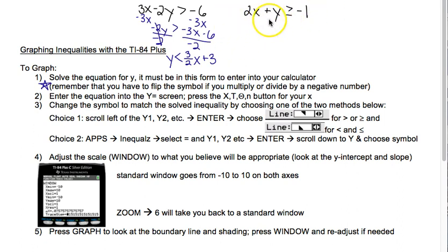The second inequality is a little bit easier because I don't have a number in front of that y. So I subtract the 2x to get the y alone, and that's all I have to do. I didn't multiply or divide by a negative, so I don't have to flip the symbol. All I had to do was subtract that 2x and I'm good to go.